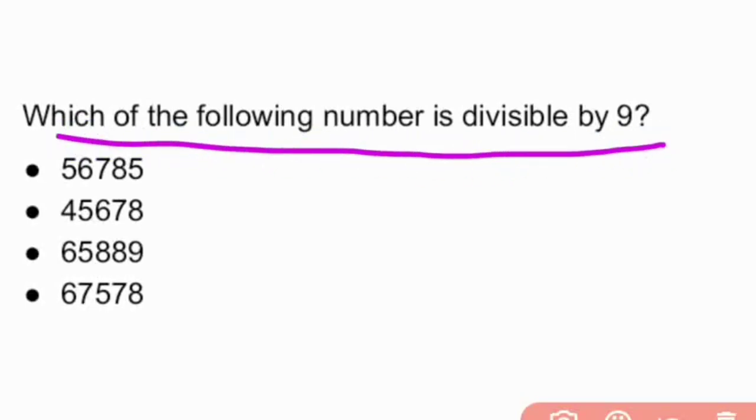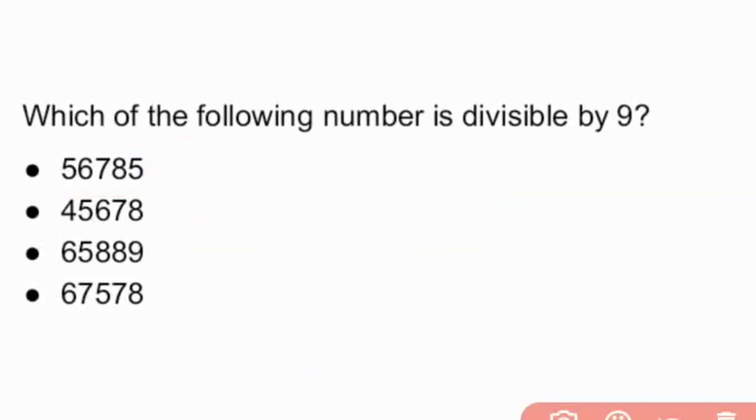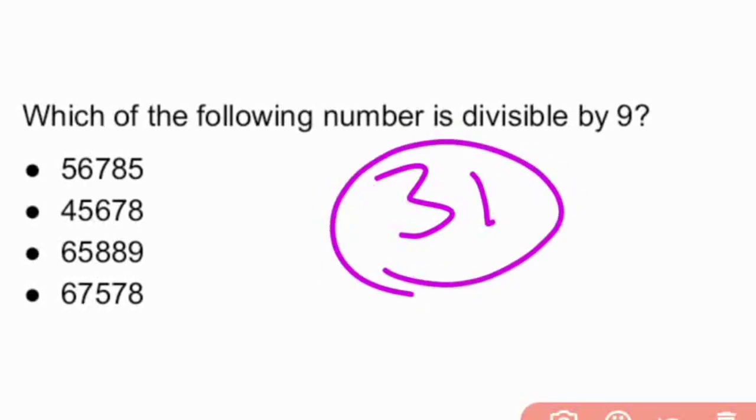Which of the following number is divisible by 9? It is simple. Just add the numbers. If the sum is divisible by 9, then that number is divisible by 9. Now, let us take the first number: 5 + 6 + 7 + 8 + 5 = 11 + 7 = 18, 18 + 8 = 26, 26 + 5 = 31. Answer is 31. 31 is not divisible by 9. So 31 is not divisible by 9.